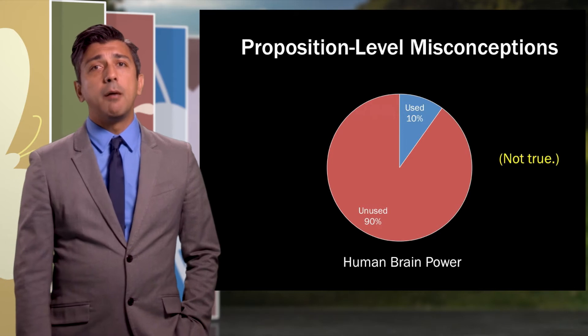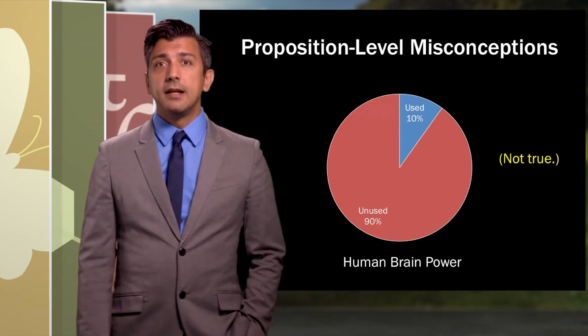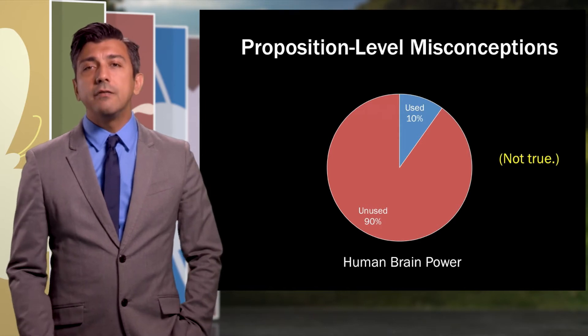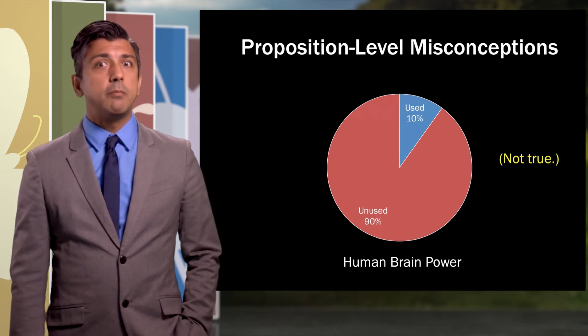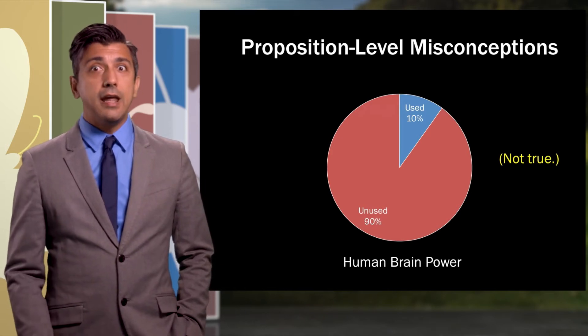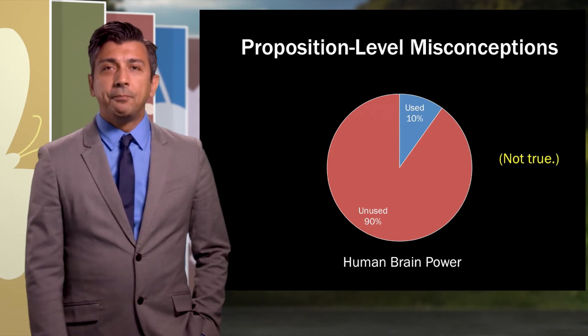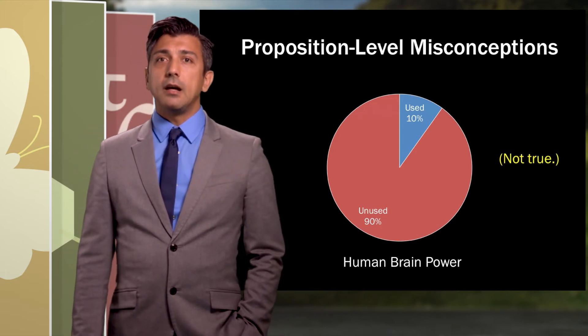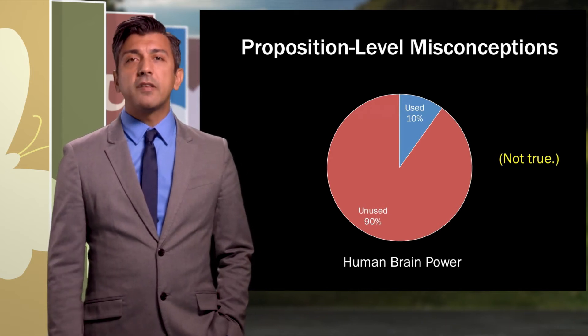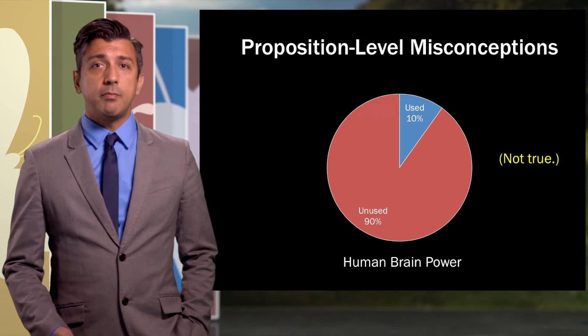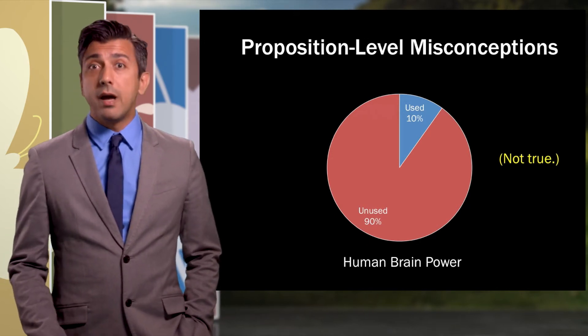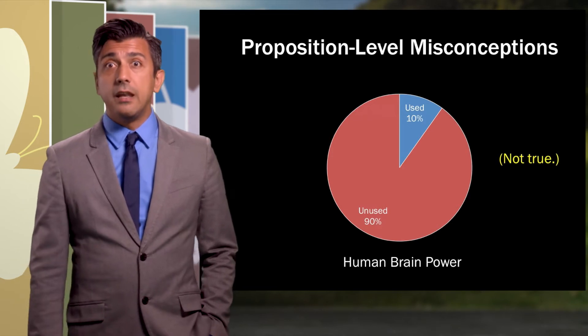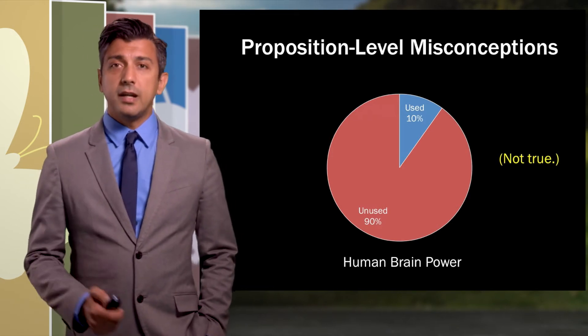So let's attack them one by one. So at the very basic level, we have proposition level misconceptions. For instance, the idea that we only use 10% of our brain. That is actually not true. It's a very seductive idea. There's a lot of movies made about people somehow figuring out how to use all of their brain and then they acquire superpowers. They're invincible. That's actually not true. This is a very easy misconception to address because it's not tied to other things.